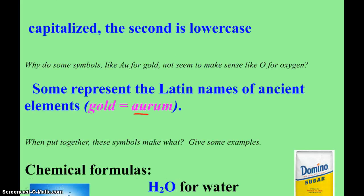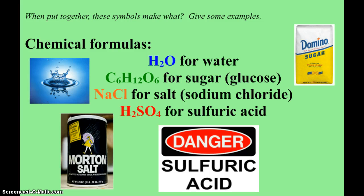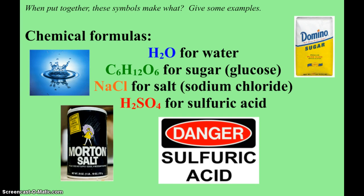Now, when we put these symbols together, we get chemical formulas. The elements go together to make a compound. And then, their symbols create the formulas. H2O, water. C6H12O6 for glucose. NaCl is sodium chloride. And H2SO4 for sulfuric acid. So, we'll see plenty of those throughout the year.